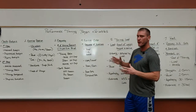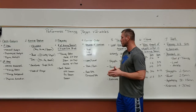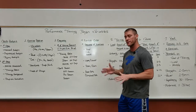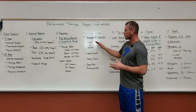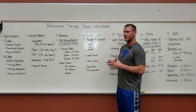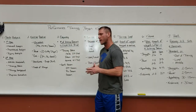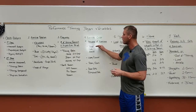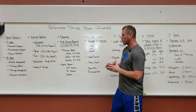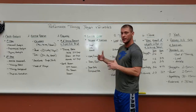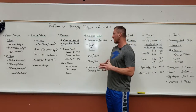Our fourth variable would be our exercise order — the sequence of exercises. There are usually four basic models. The most typical is power, core, and assisted exercises. Power exercises such as Olympic lifts or plyometrics would go first in the sequence. Then you would go to your core lifts such as deadlift, squat, or bench, or any of their variations. Then your assistive work or any kind of core work.